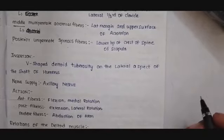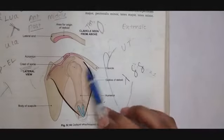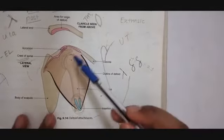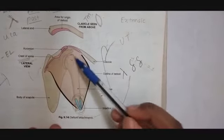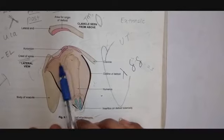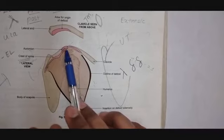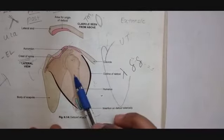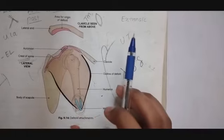Now let us discuss about the relations of the deltoid muscle in detail. This is a diagram that you have to draw if they ask about the deltoid muscle during exams. From this diagram you can see that this deltoid muscle overlies the humerus, the articulation between the scapula and humerus namely the shoulder joint, and the connection between the coracoid process and the acromion process, which is nothing but the coracoacromion ligament.